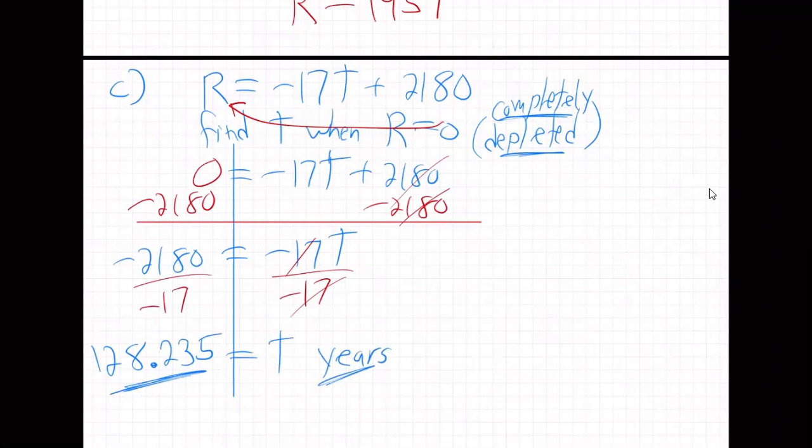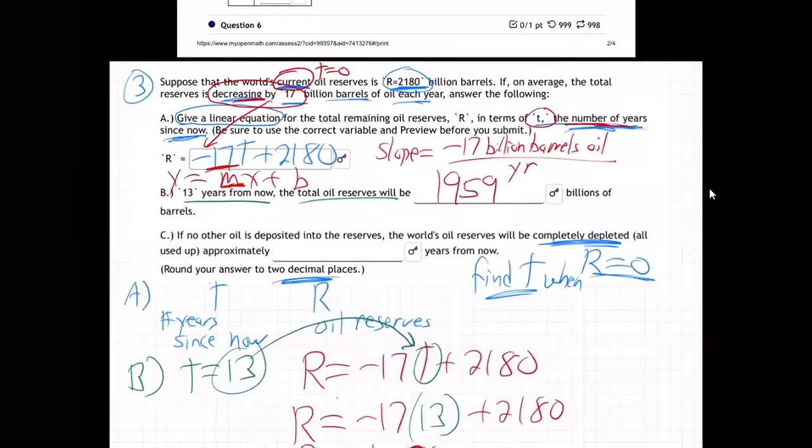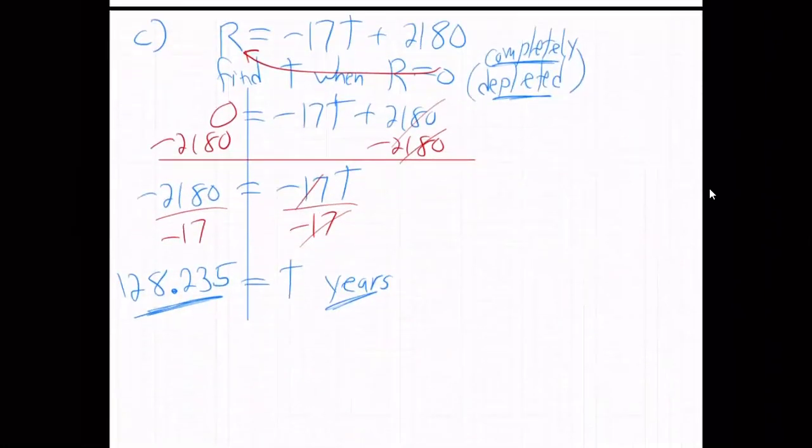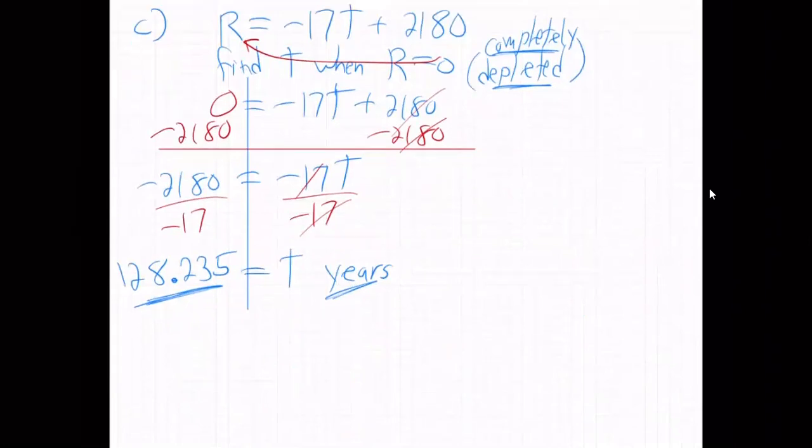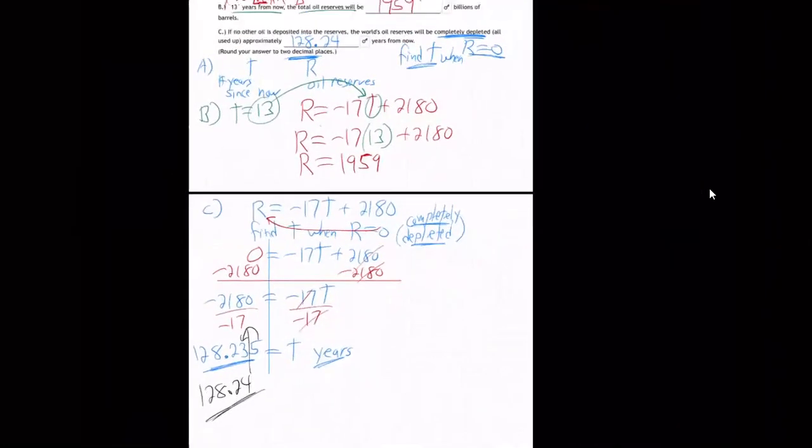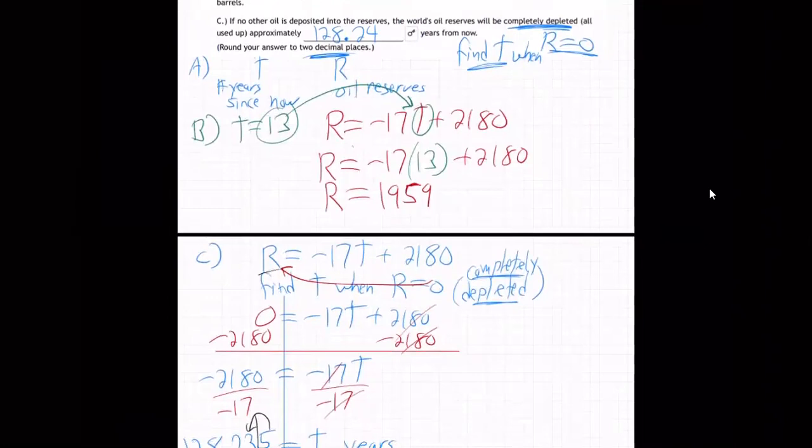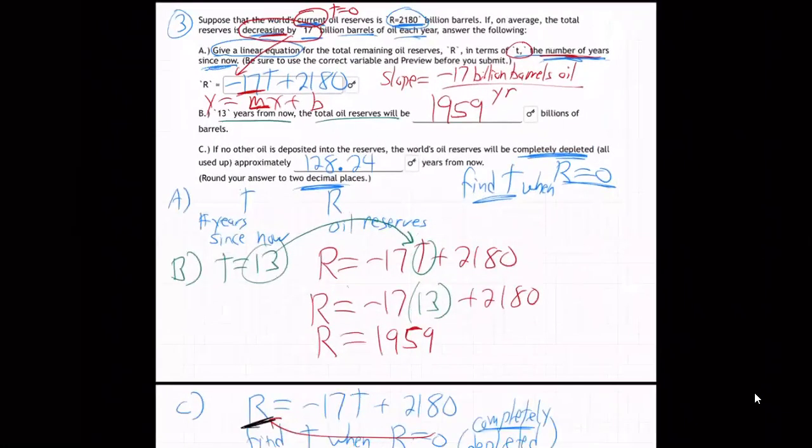So, let's go back and, oh, they say two decimal places. That's what I was looking for. Two decimal places. Okay. So, 128.24. It'll have to round to 24 is my answer. Because, right, you know, decimals, if you cut it there, that five says to round up. So, 128.24. So, there we go. That's a little bit tricky how you figure that out. Use that formula and you plug in R as zero because that's when it's completely depleted. No reserves. Zero reserves. And then you just solve for T. You find out the time when that happens. So, there we go. Real life word problem, linear function.